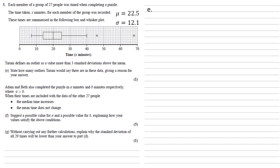For part E, we need to state how many outliers Taruni would say there are in these data, giving a reason for our answer. Our mean is 22.5, standard deviation is 12.1. So three standard deviations away from the mean is 22.5 plus three times 12.1, which is 58.8. Looking at the box and whisker plot, there's only one value bigger than that, the 68 on the far right hand side. So there's only one outlier.